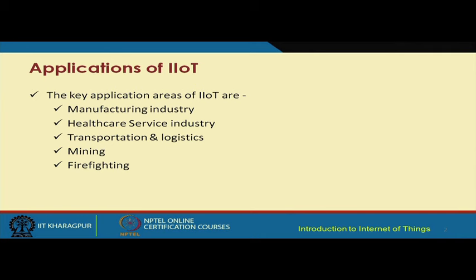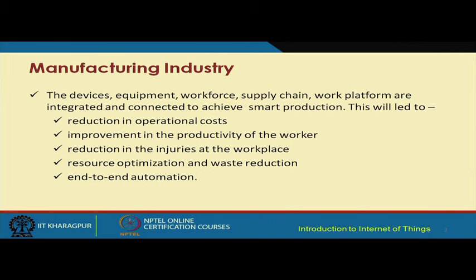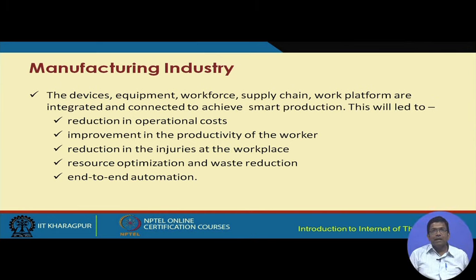Some of the key application areas of IIoT are: manufacturing industry, healthcare industry, transportation and logistics, mining, and firefighting. In terms of manufacturing, in a manufacturing industry there are a lot of manufacturing devices, equipment, workforce, supply chain operations, and different work platforms. All of these have to be integrated and connected to achieve smart production.